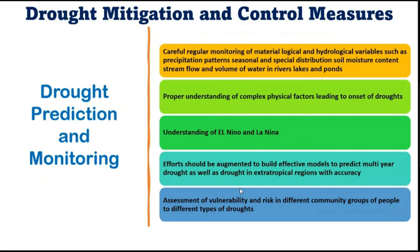For drought prediction and monitoring, careful and regular monitoring of meteorological and hydrological variables is required. This includes precipitation patterns such as amount, variability, and spatial distribution of rainfall; soil moisture content; stream flows; and volume of water in rivers, lakes, and ponds over time. This helps in determining the onset or end of drought. Satellite remote sensing technology can also be used for quantitative modeling and monitoring over large geographical areas. Proper understanding of complex factors leading to drought onset is essential for reliable monitoring.